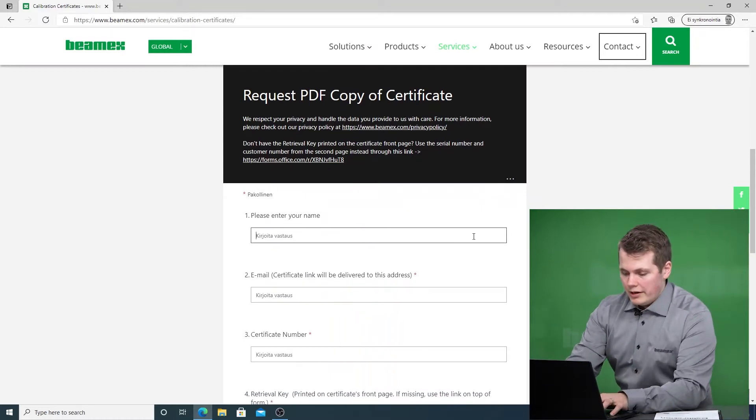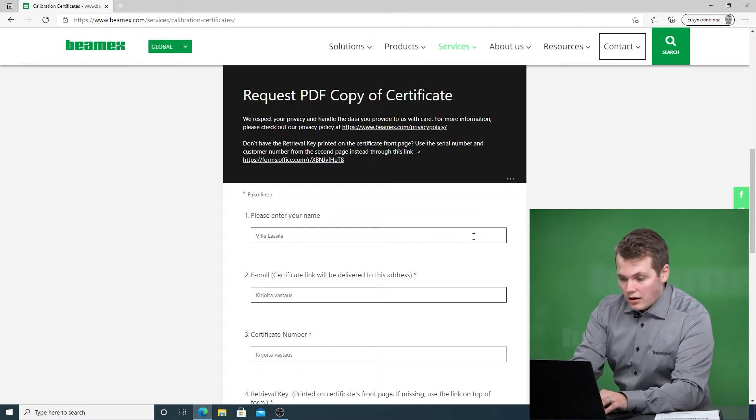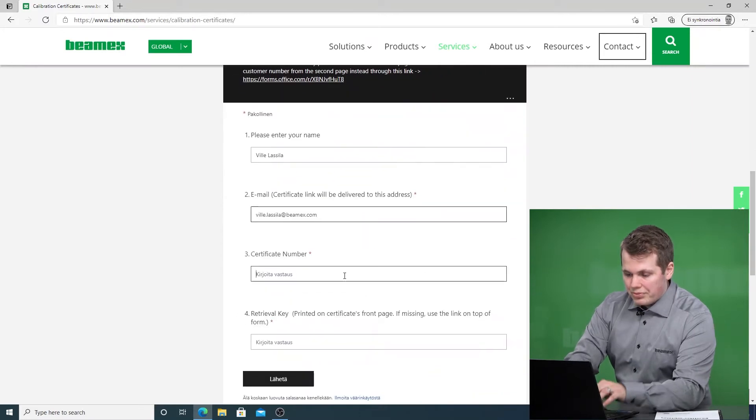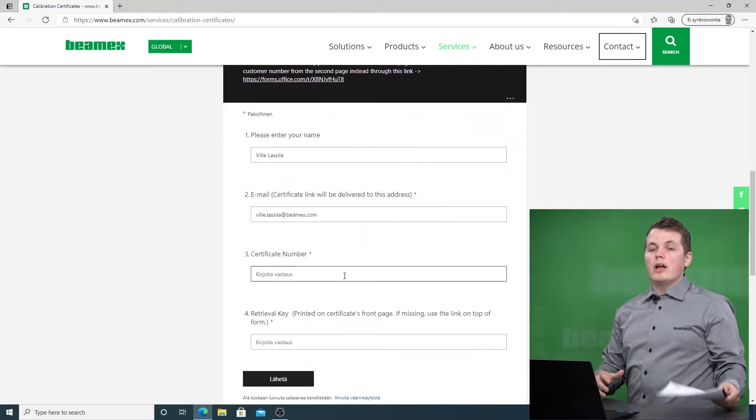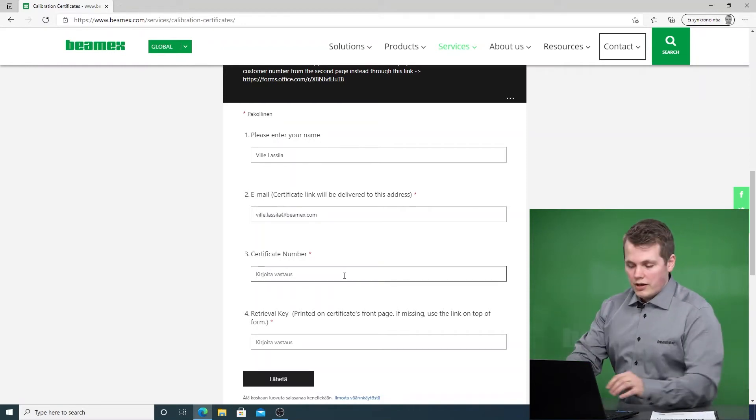So I'm gonna enter my name Ville Lassila, don't worry if you can't pronounce that, and then I will enter my email address Ville.Lassila@Beamex.com. And then it'll ask me for the certificate number and of course the certificate number is right here in the front page of the calibration certificate.